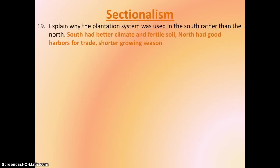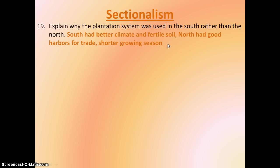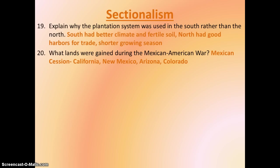Alright, sectionalism. Why was the plantation system used in the south rather than the north? Well, there are a bunch of reasons. Going back to the settling of the north and the south, it's just very different geographically. The south had a better climate, longer growing season, more fertile soil, and more flat land — it was just great for huge farms. Whereas in the north they did have farms, but they were small farms. They had great harbors for trade, didn't have the longer growing season, and had rocky soil — they're just not going to have plantations there. So as time goes on, the south says we want more land, which is called Manifest Destiny.